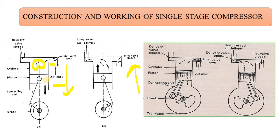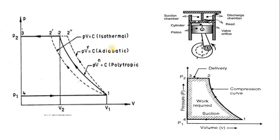Again, the crank rotates continuously. At that time the piston moves from BDC to TDC. Whatever the air is trapped on the above side of the piston gets compressed, and the piston exerts force on that particular air. The air is compressed and high pressure air moves out from the delivery section and it is stored in the reservoir for further application. This is the basic simple construction and working of the single stage reciprocating compressor.